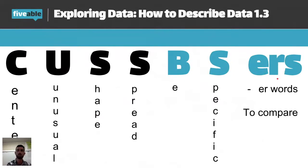And then the ER is just use comparing words. So it's not enough just to say the median of this is 12, the median of this distribution is 14. No, we need to compare. So let's actually break down each of these letters a little bit more.